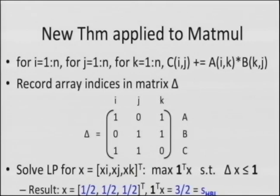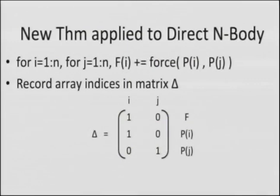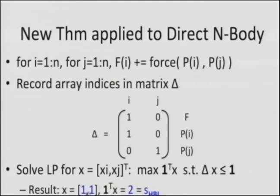Applying the theorem to direct N-body: two nested loops over every pair of particles. The same matrix structure gives a linear program whose solution is (1, 1), summing to S_HBL = 2. The theorem says no matter how you reorganize the N-body algorithm, you must move at least n² / M^1 words. This even applies when M is bigger than the data — the replication trick — and again we get a 12x speedup on 8,000 cores with 32,000 particles.